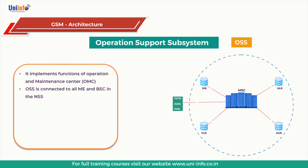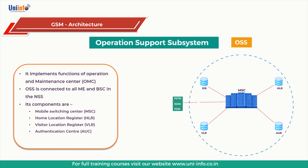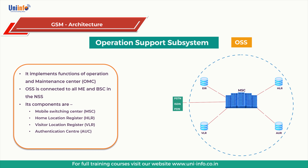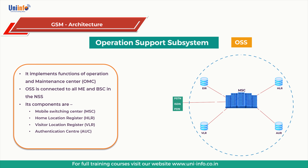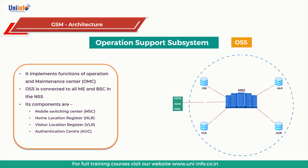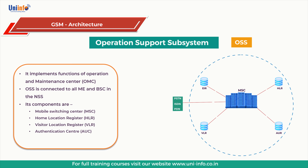Our next topic is operation support subsystem. Operations and maintenance center (OMC) is connected to all equipment in the switching system and to the BSC. The implementation of the OMC is called the operation and support system (OSS). The OSS is a functional entity from which the network operator monitors and controls the system. The purpose of OSS is to offer cost-effective support for centralized, regional and local operational and maintenance activities required for a GSM network. Functions of OMC include: first, administration and commercial operations — subscription, end terminals, charging and statistics; second, security management; third, network configuration, operation and performance management; fourth, maintenance tasks.